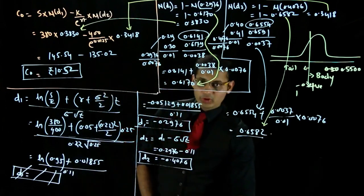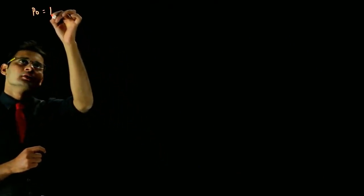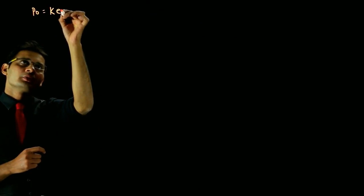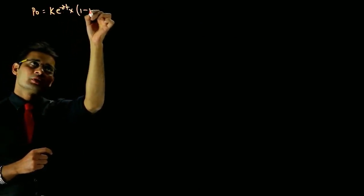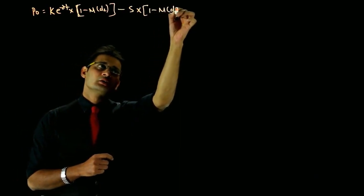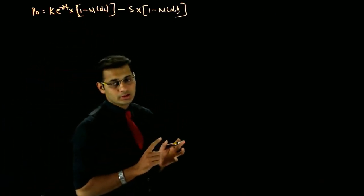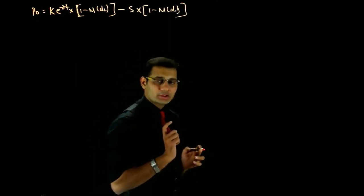Third part: Put option की value निकालनी है with S = Rs.380. Black-Scholes put option formula: Put = K·e^(−rt)·(1−N(d2)) − S·(1−N(d1)). यह call option formula का उल्टा है — यहाँ tail values यानी (1−N(d1)) और (1−N(d2)) use होती हैं। Put-call parity से भी निकाल सकते हैं।